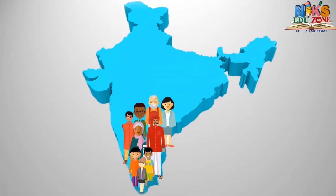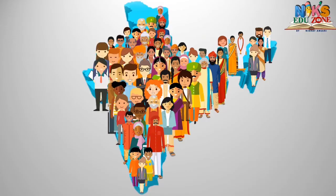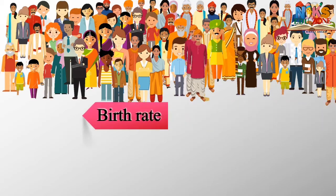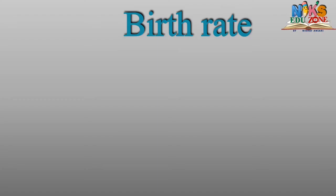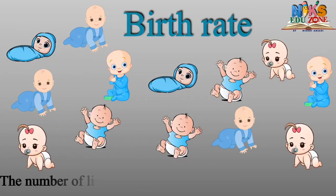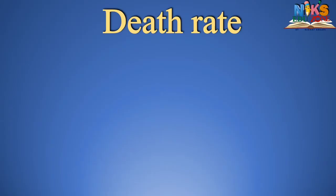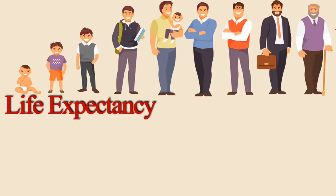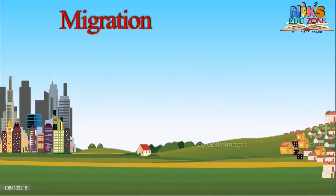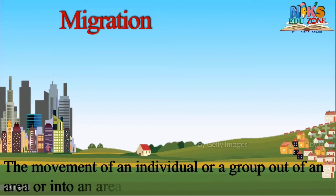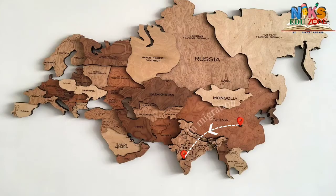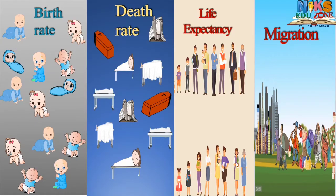From this exercise, it can be seen that there is a constant change in the population of a region — sometimes a decrease, at other times an increase. This increase or decrease is related to some factors: birth rate, death rate, life expectancy, and migration. Birth rate is the number of live births per 1,000 people in a year. Death rate is the number of deaths per 1,000 people in a year. Life expectancy is the average life span of an individual expected in an area at the time of birth. Migration is the movement of an individual or group into or out of an area — movement into a region is called in-migration, and movement out is called out-migration.